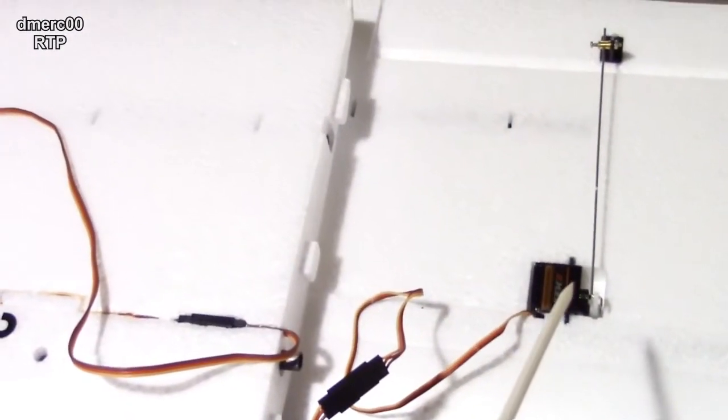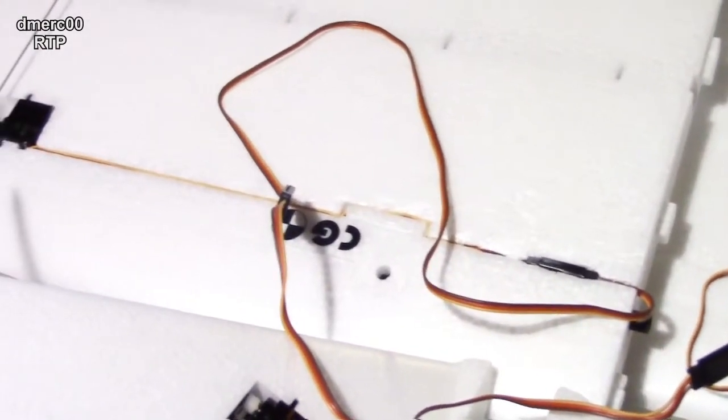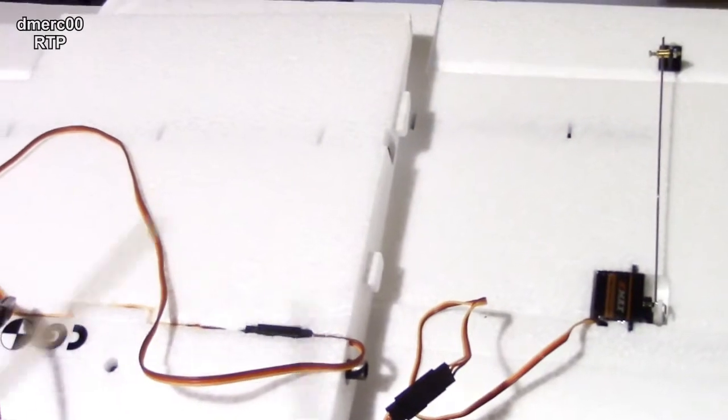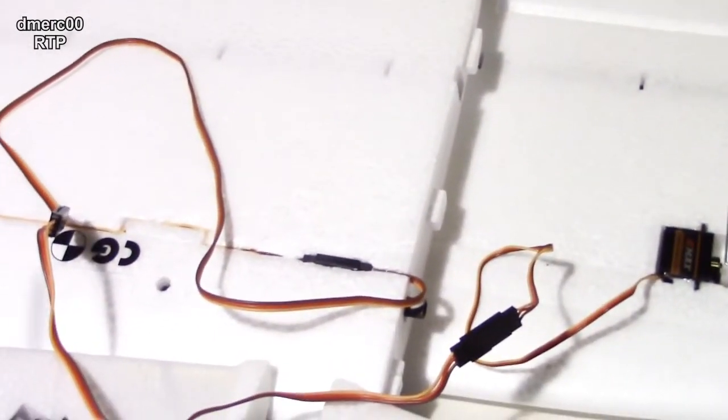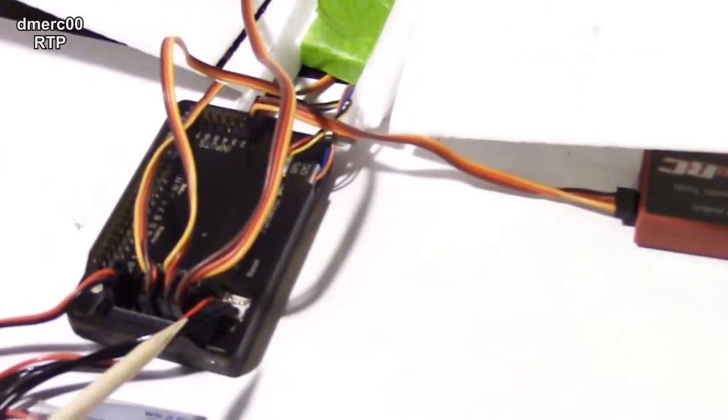So that's the magic. The servos are just flipped over according to the manufacturer's design. The holes are already cut that way so they point opposite directions. So that's how that works. There's no programming to it, there's no special wiring. Just put a Y-splitter on and connect it to channel 1.